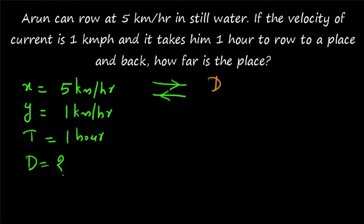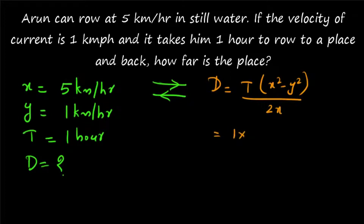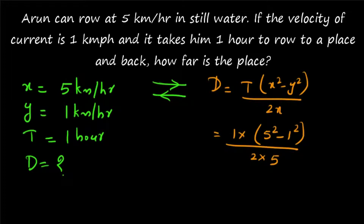Applying the formula: d = t(x² - y²) / 2x = 1 × (5² - 1²) / (2 × 5) = (25 - 1) / 10 = 24 / 10 = 2.4 kilometers. So the distance is 2.4 kilometers.